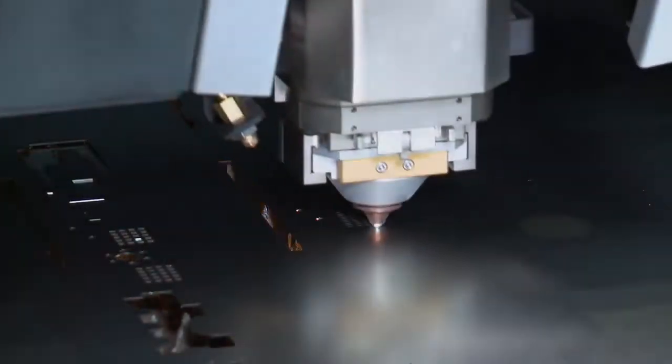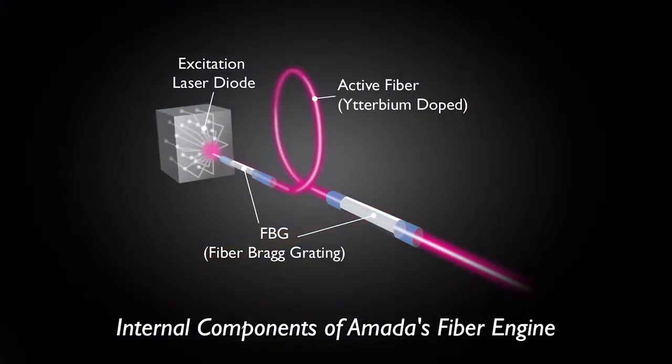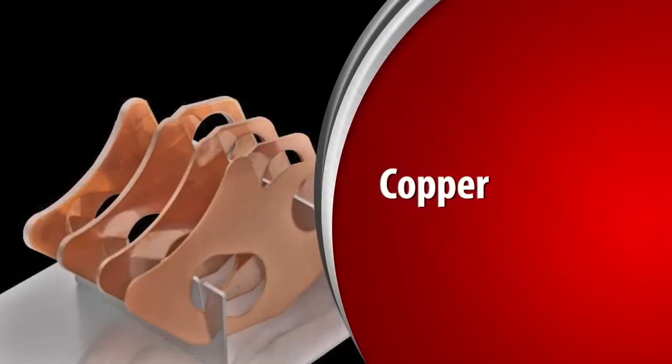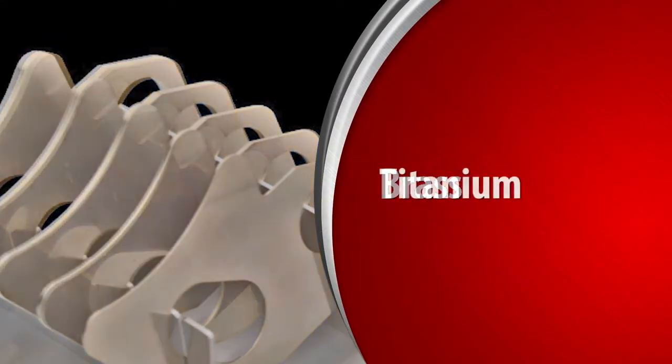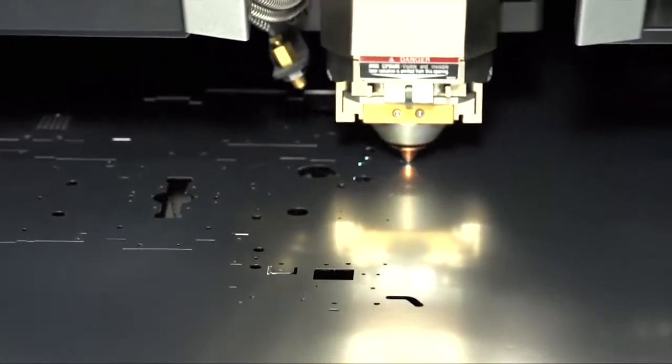Amada is the world's first manufacturer to design its own fiber laser source. The AJ fiber engine is capable of cutting materials such as copper, brass, and titanium while processing common materials with speeds up to four times faster than a comparable CO2 laser.